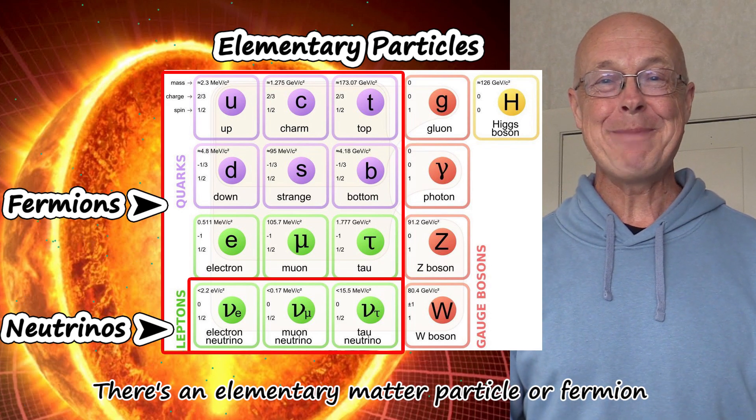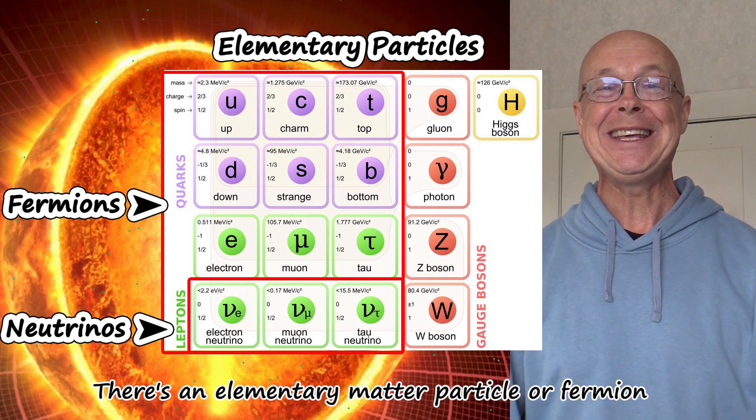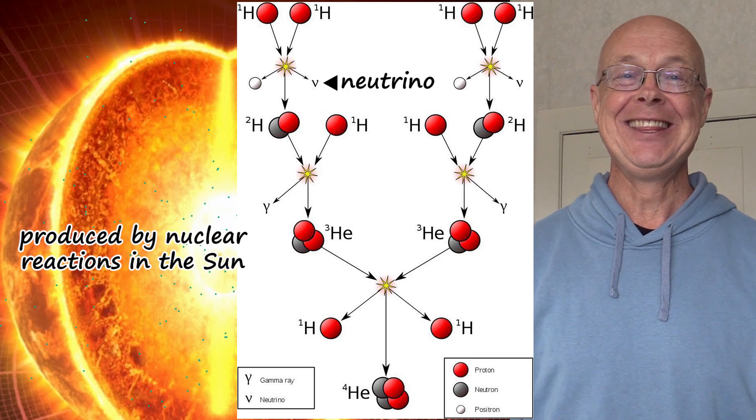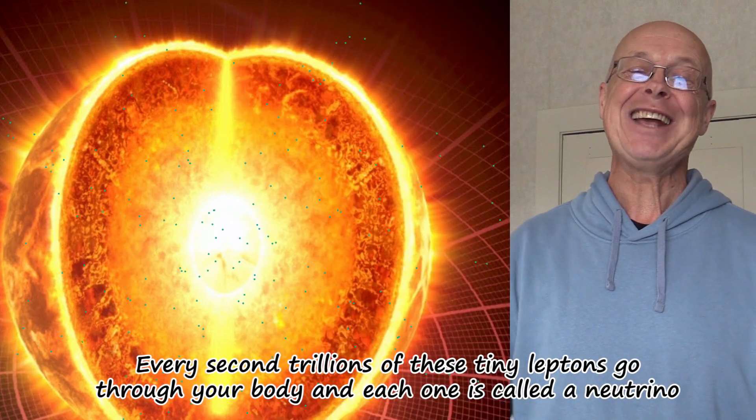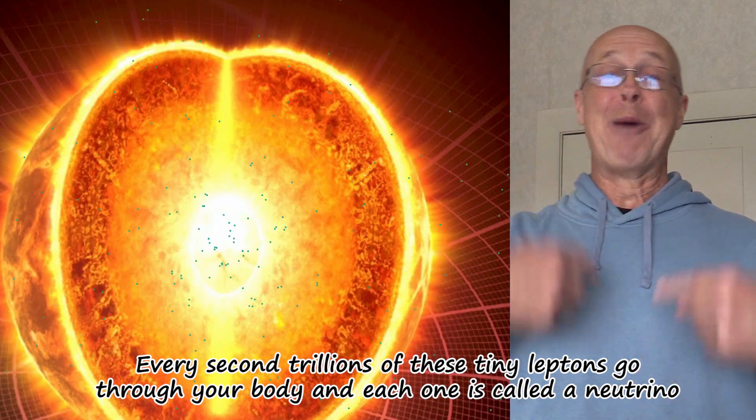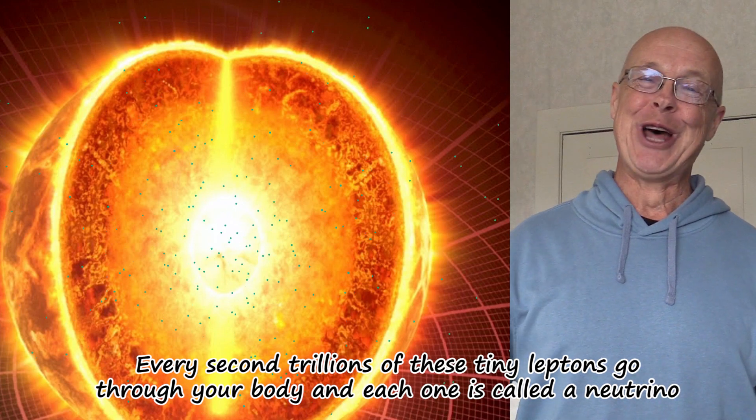There's an elementary matter particle or fermion produced by nuclear reactions in the sun. Every second, trillions of these tiny leptons go through your body, and each one is called a neutrino.